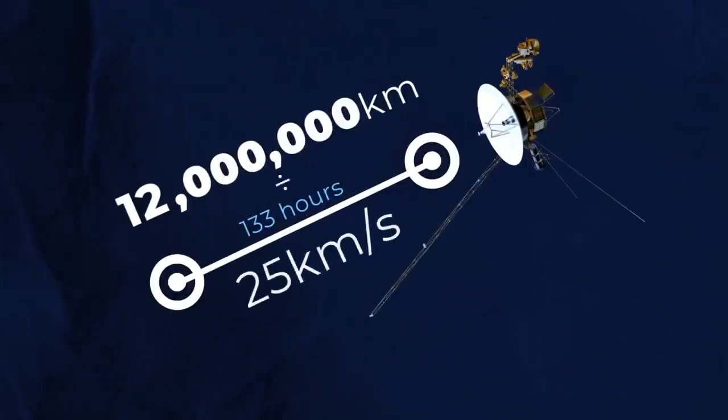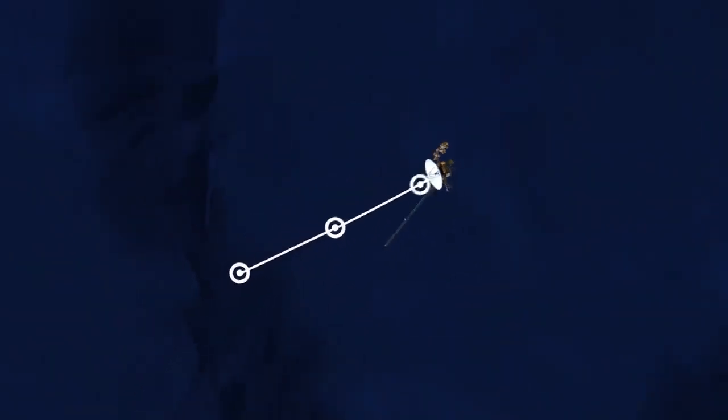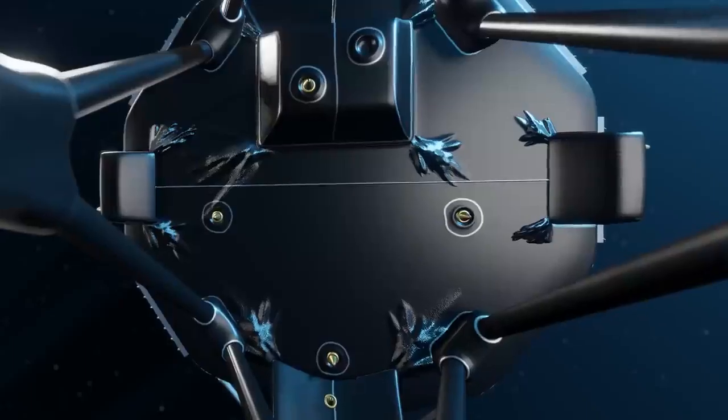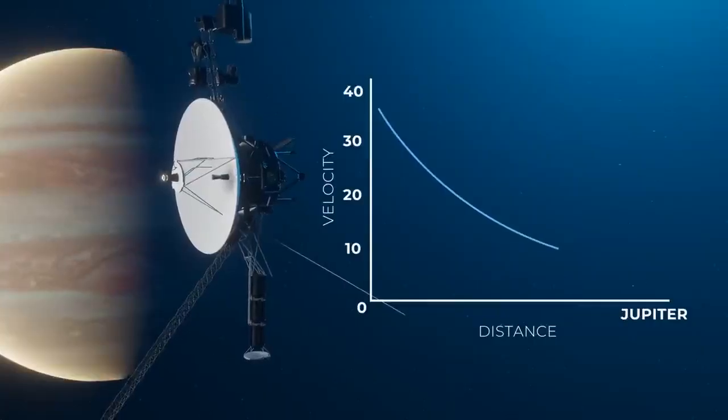Voyager 1, currently located around 15 billion miles away from Earth, holds the title of humanity's most distant spacecraft and famously captured the iconic image, pale blue dot, humblingly showcasing Earth as a mere speck in the vastness of space.